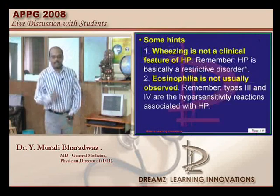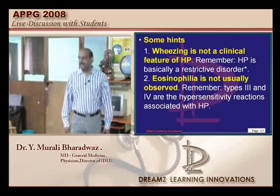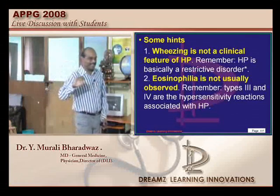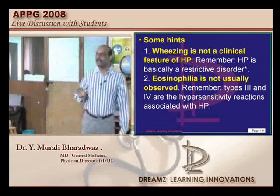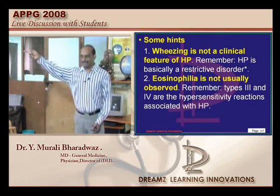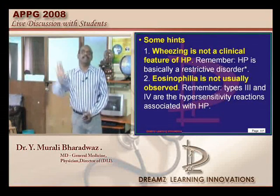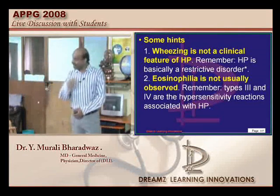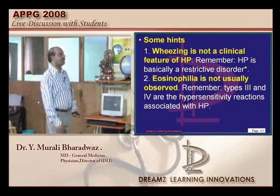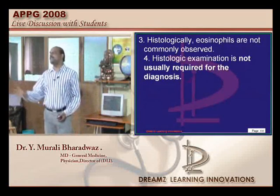There are major and minor criteria to diagnose extrinsic allergic alveolitis. In examination, if the examiner asks and you say wheeze is present — that is wrong, because it is not obstructive. Eosinophilia is not observed because it is a Type 3 and Type 4 hypersensitivity, not Type 1 hypersensitivity. Histologically, eosinophils are not commonly seen.